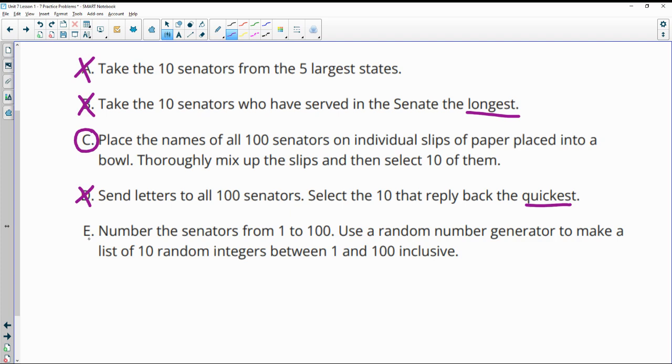Number the senators one to one hundred. Use a random number generator to make a list of ten random integers between one and one hundred. So that would be good.